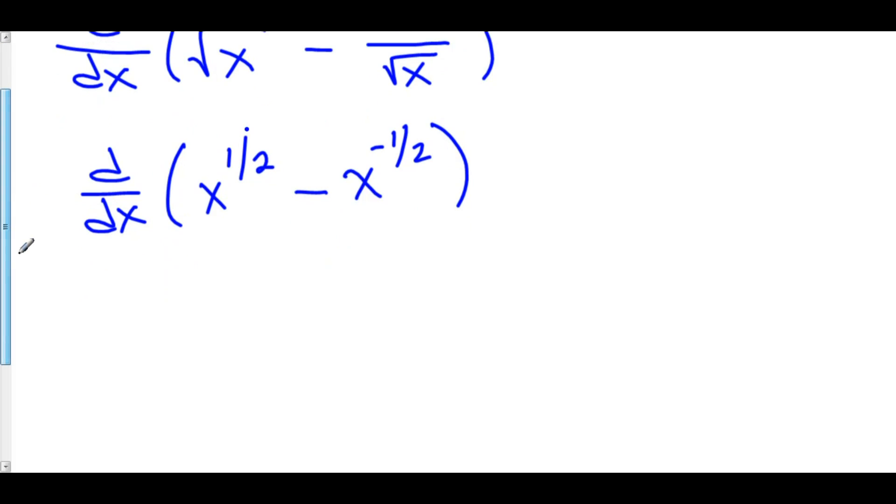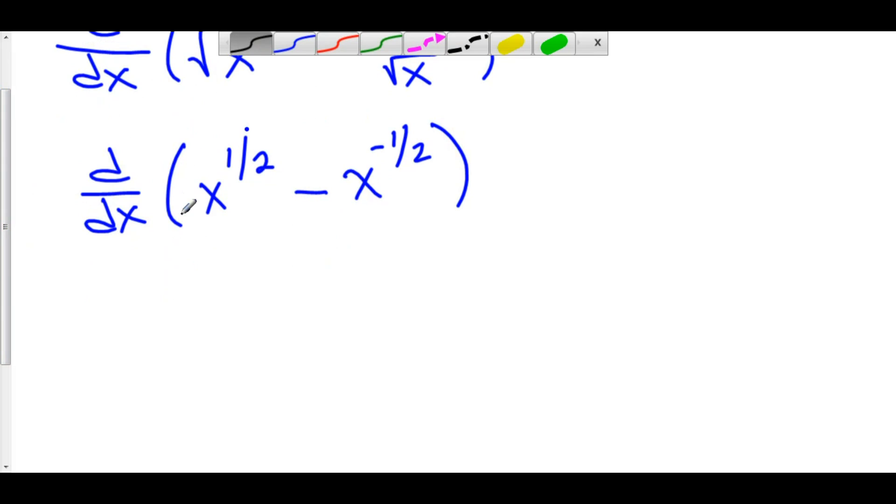Let's do power rule. The derivative of x to the 1 half: we take our 1 half and move it in front. So we've got 1 half x, then we subtract 1. 1 half minus 1 is negative 1 half.